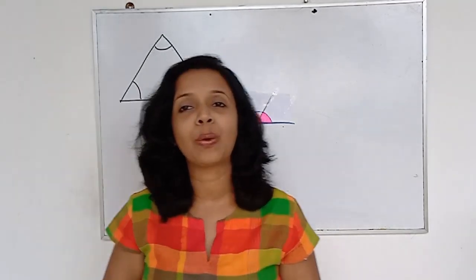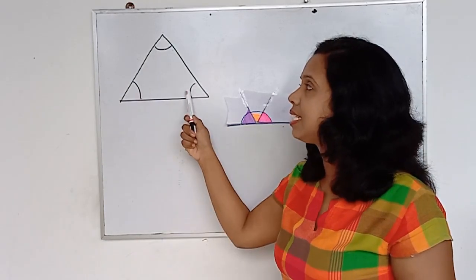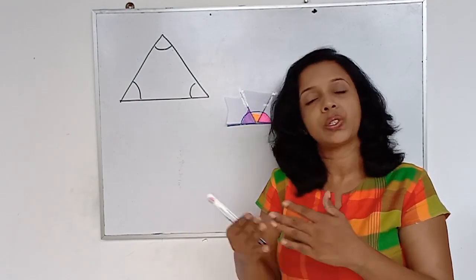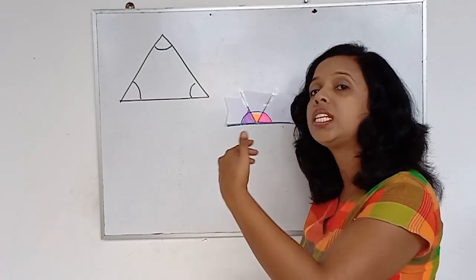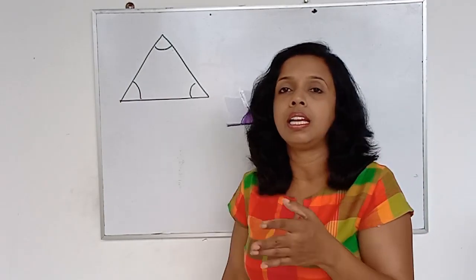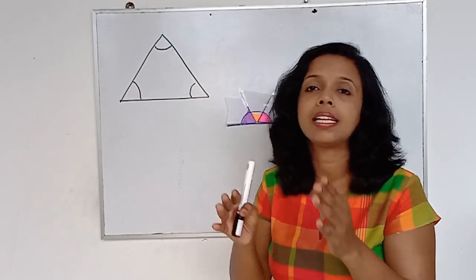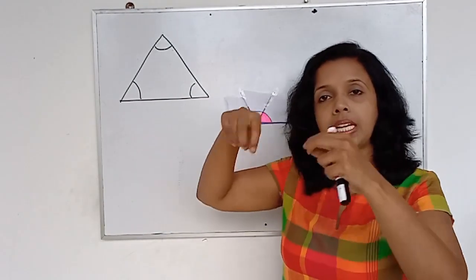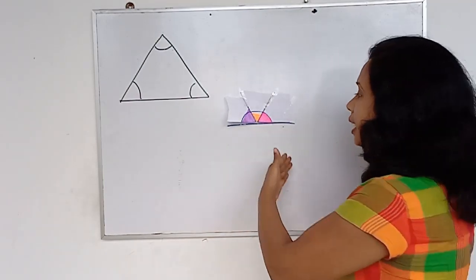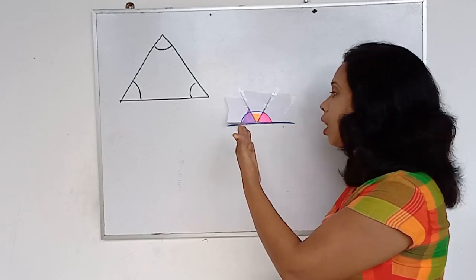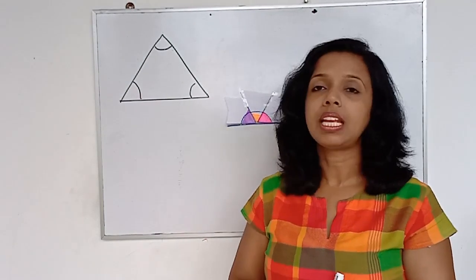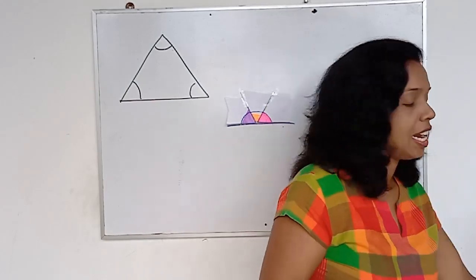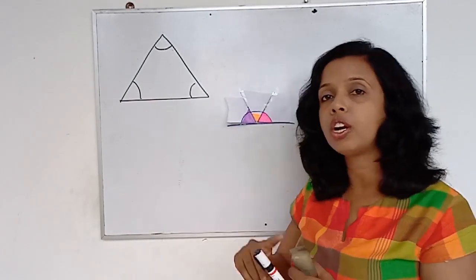Angles in a triangle add up to 180. That is the first theory I'm going to talk about in this video — angles in a triangle add up to 180. Without telling that theory straight away, I wanted to show you how it came. Randomly I divided the triangle into three pieces and arranged them in an order where I found a straight angle.